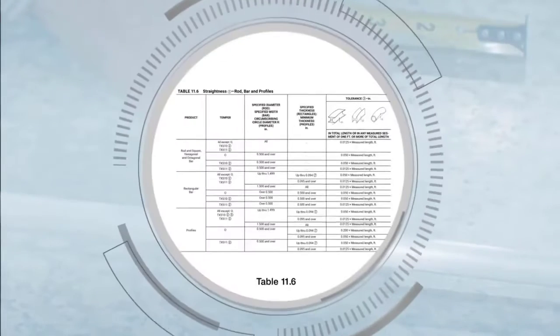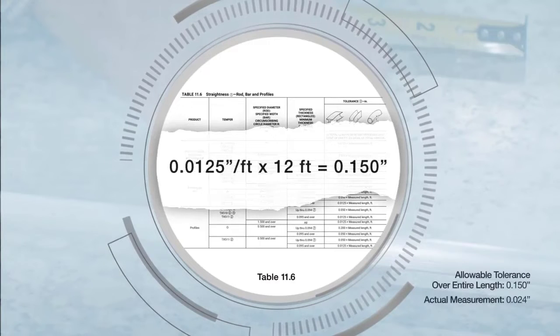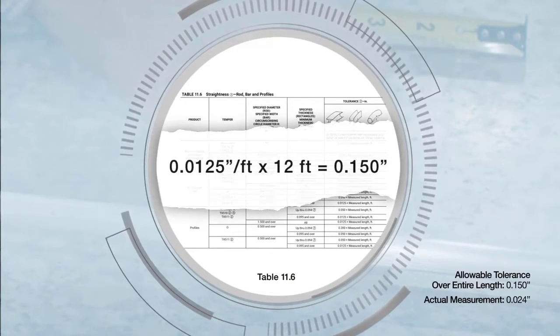To calculate the allowable straightness over the full 12 foot length, multiply twelve and a half one thousandths of an inch by 12 foot to get one hundred and fifty thousandths of an inch.